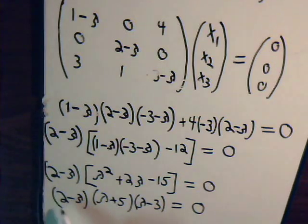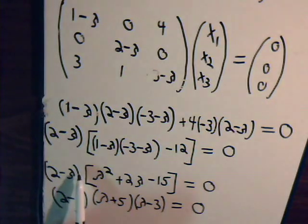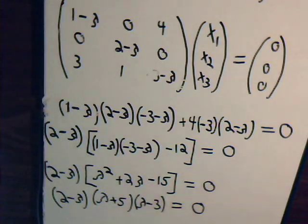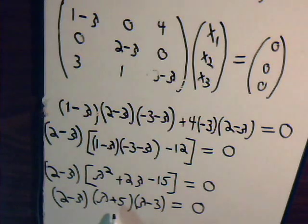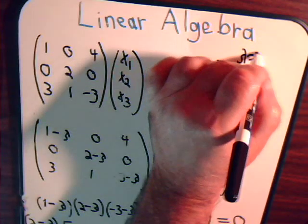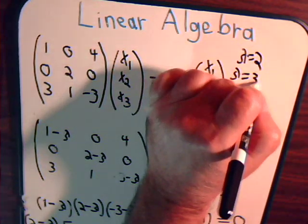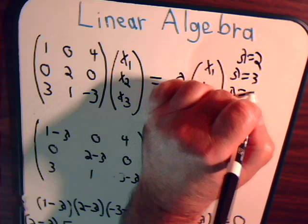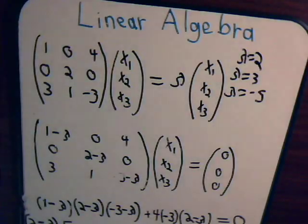So our eigenvalues are lambda equals 2, lambda equals 3, and lambda equals minus 5. Note: we didn't cancel out the (2-λ) factor, because if we had, we would have missed that eigenvalue. So we have three eigenvalues: λ = 2, λ = 3, λ = -5.